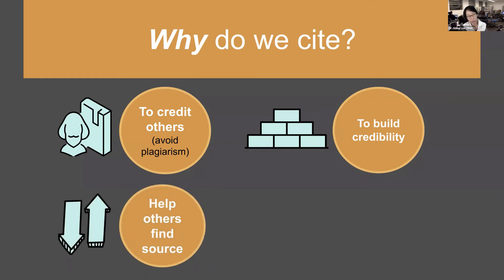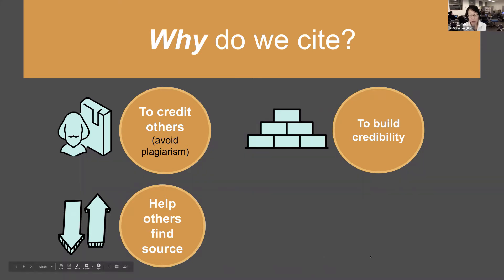Another thing you're doing when you cite is helping others find the source. Often you'll find yourself doing this — maybe you're writing about plagiarism and you look up an article, and within that article you find a source that's really useful. You might then look up that article to help build your bibliography. Scholars often use the bibliography of other scholars to find additional sources, and you might want to do this yourself.